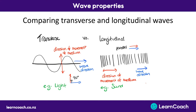Here's a quick comparison of transverse and longitudinal waves. Transverse is when the direction of the movement of the medium is at right angles to the direction of the movement of the wave — an example of a transverse wave is light. A longitudinal wave is when the direction of the movement of the medium is parallel to the direction of the movement of the wave — an example of a longitudinal wave is sound.